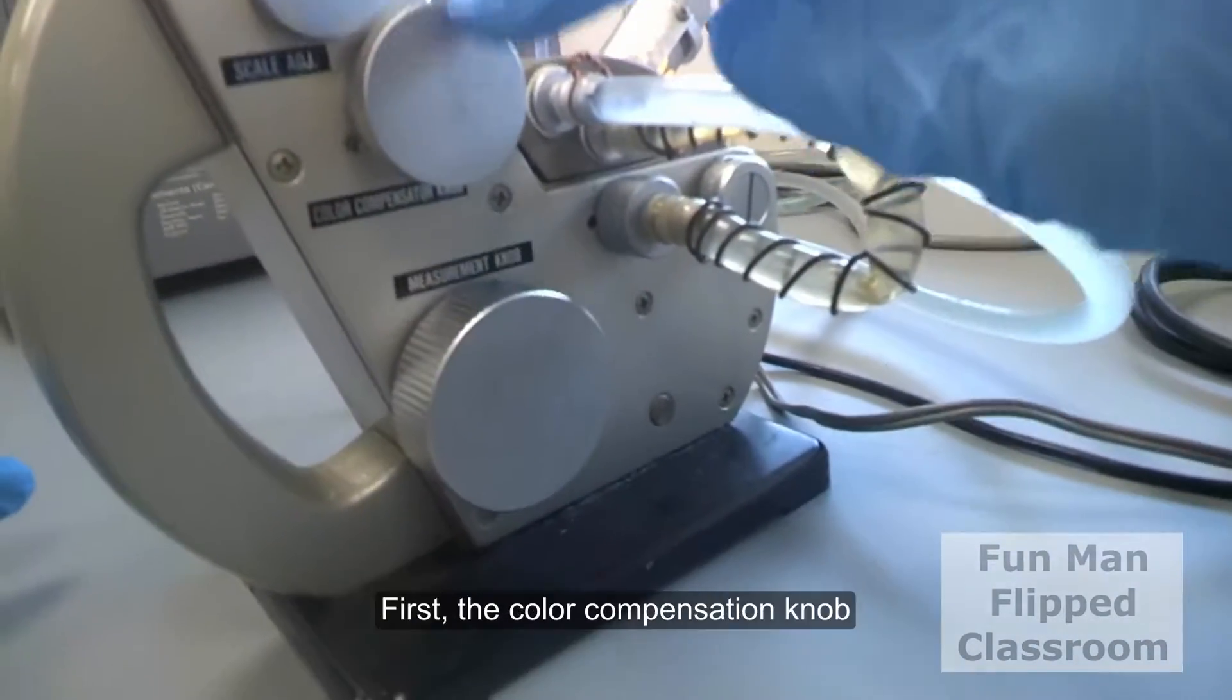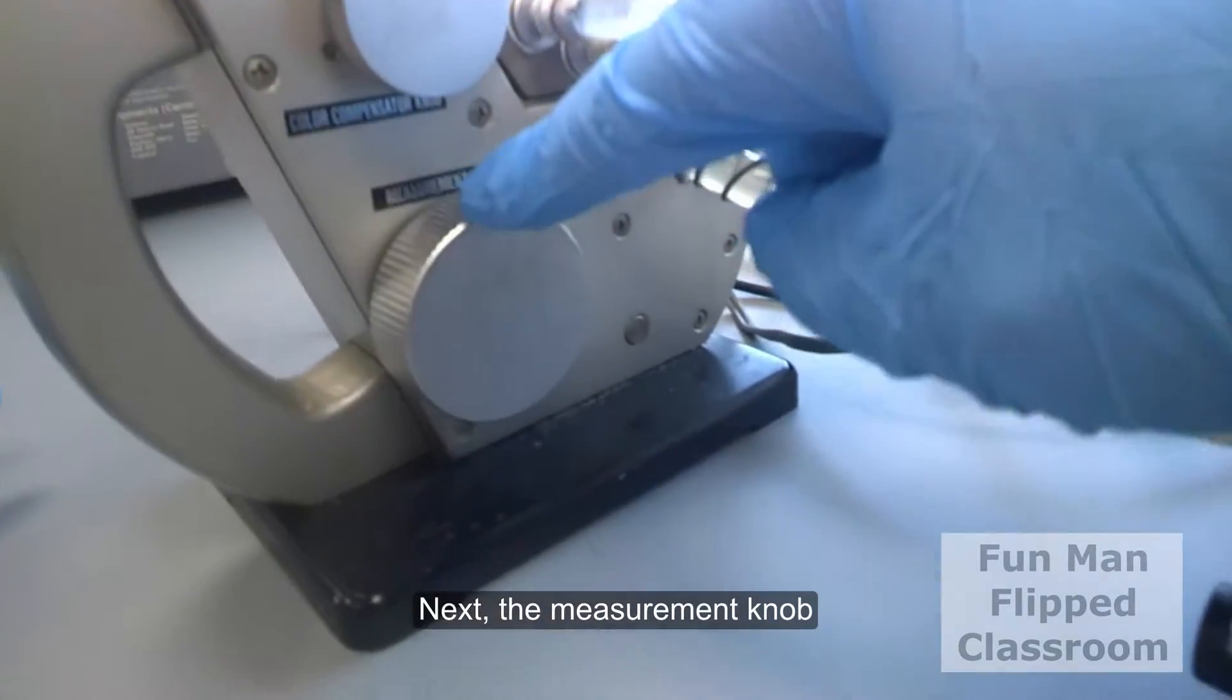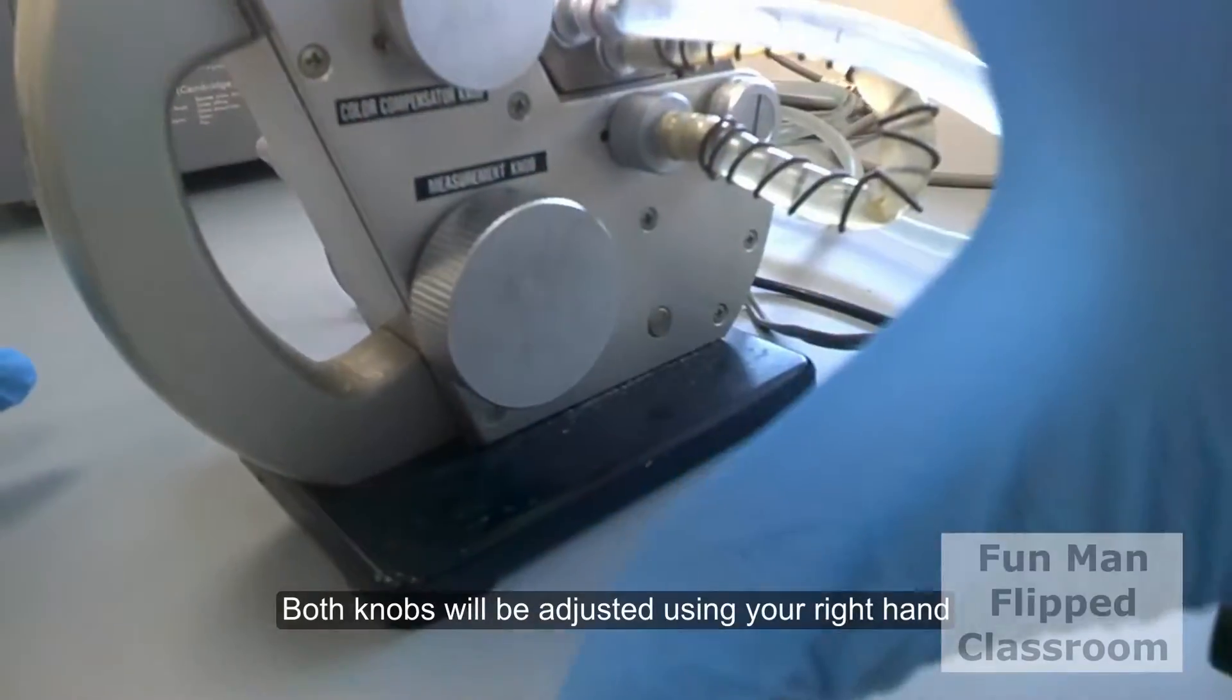Now first, the color compensation knob. Next, the measurement knob. Both knobs will be adjusted using your right hand.